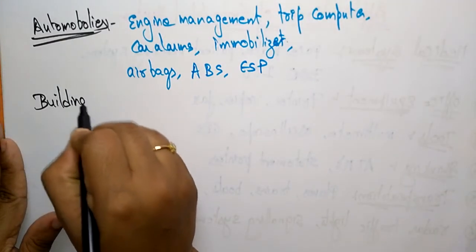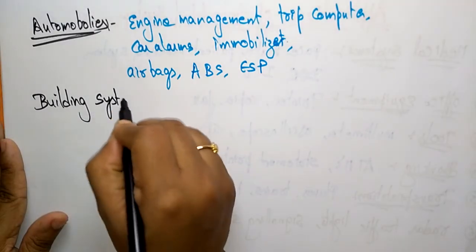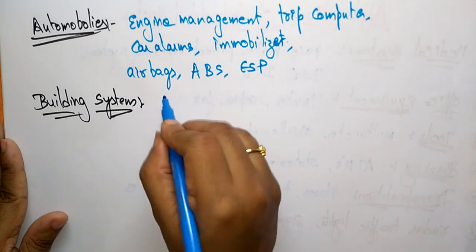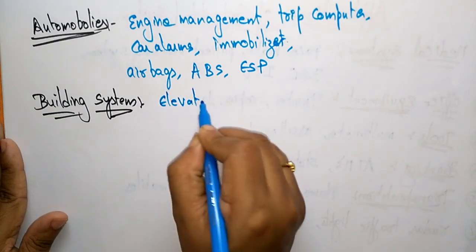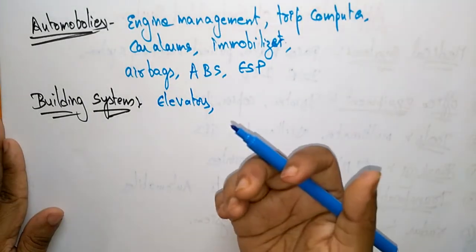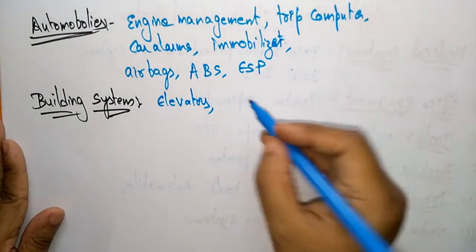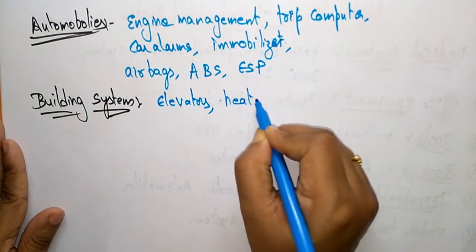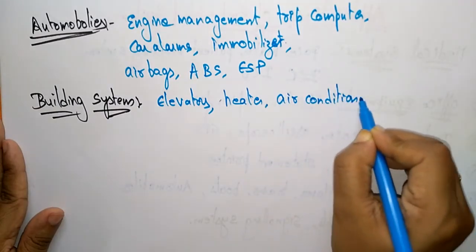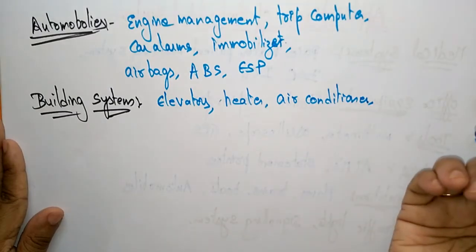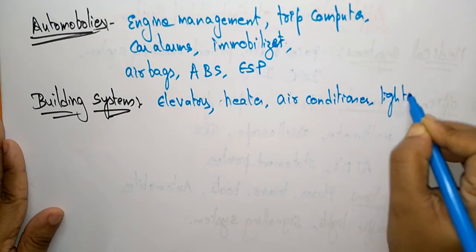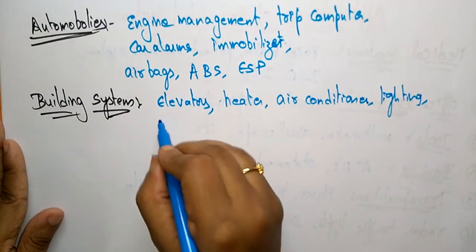In building system applications, embedded systems are used in elevators — whatever elevators you use in your building are constructed with embedded systems. Heaters, geysers, and air conditioners are also built with embedded systems. Lighting and key card entry systems use them as well.